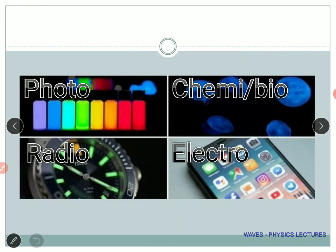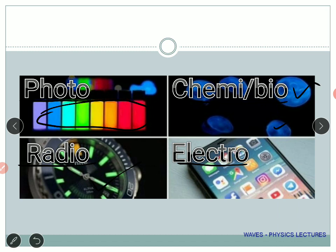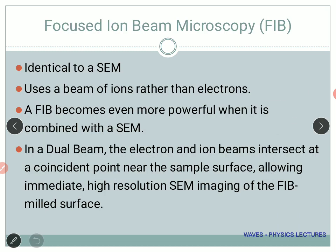Some examples: photoluminescence includes quantum dots — if you make boron nitride quantum dots and allow UV light to fall on them, they will start glowing. Chemiluminescence includes bioluminescence such as jellyfish that glow in the dark. Radioluminescence technology is used in watches. Your mobile phone basically works on electroluminescence — an electric field is applied based on which the screen works.